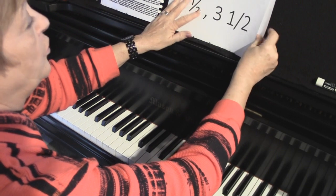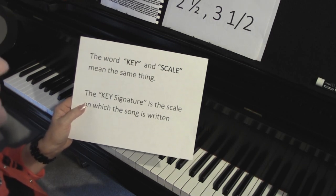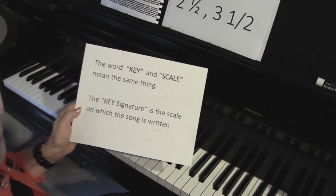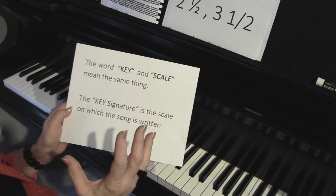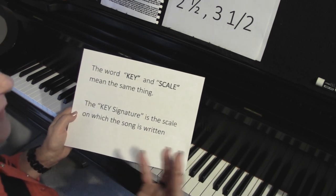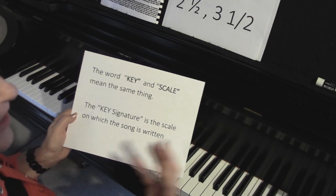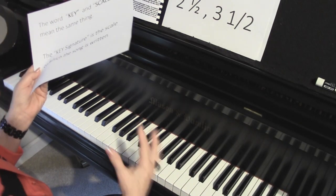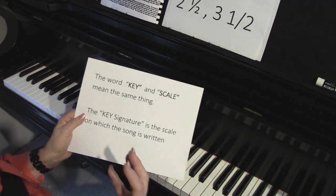The first thing you need to know is that 'key signature' and 'scale' mean the same thing. The key signature is the scale on which the song was written. My teacher used to say, play the song in the key of G — what she didn't explain was that it simply means the composer used the G scale to write the song. The chords came from the scale, the melody came from the scale, the sharps and flats came from the scale, and it determined the pitch — high key or low scale.